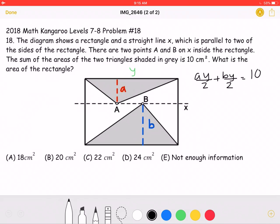So we know from the problem that the sum of the areas of the two triangles shaded in gray is 10 centimeters squared. Therefore, this means that A, which is the height of this triangle, times Y, which is the base, over 2, plus B, which is the height, times the base, which is also Y, over 2, must be equal to 10.